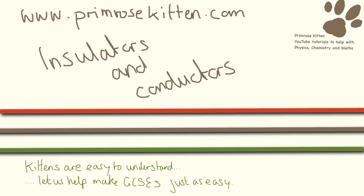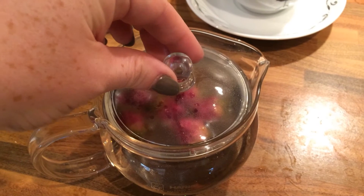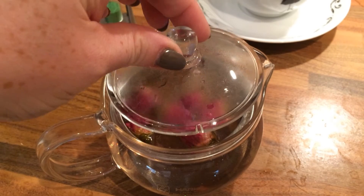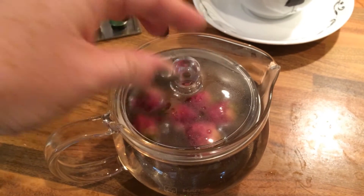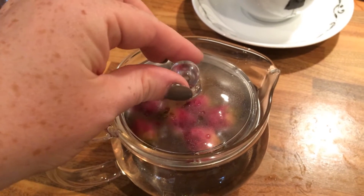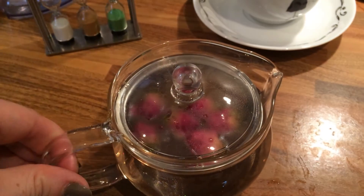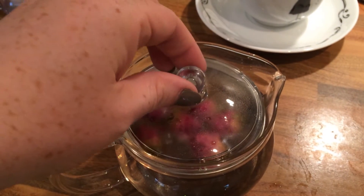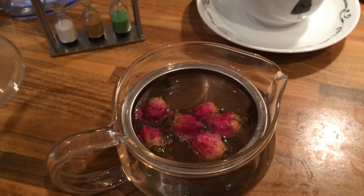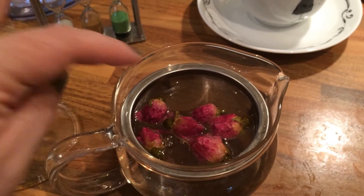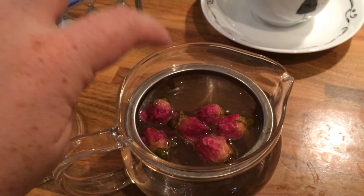Here are some examples of insulators and conductors for you. Here I have a glass teapot. You can see it's really, really easy for me to pick the lid up. It's not hot. I can touch any part of it and I can touch it fine.